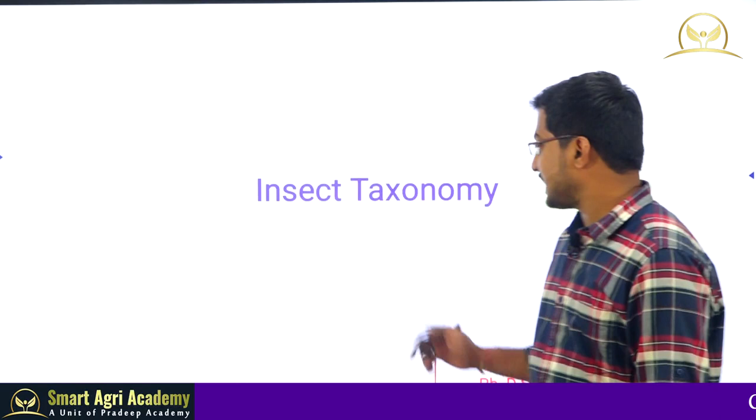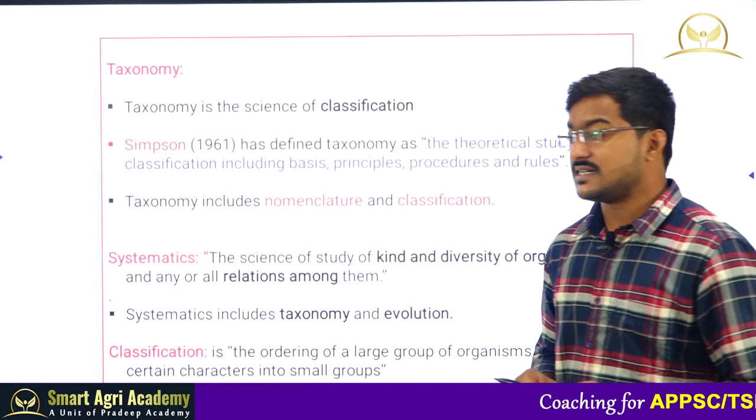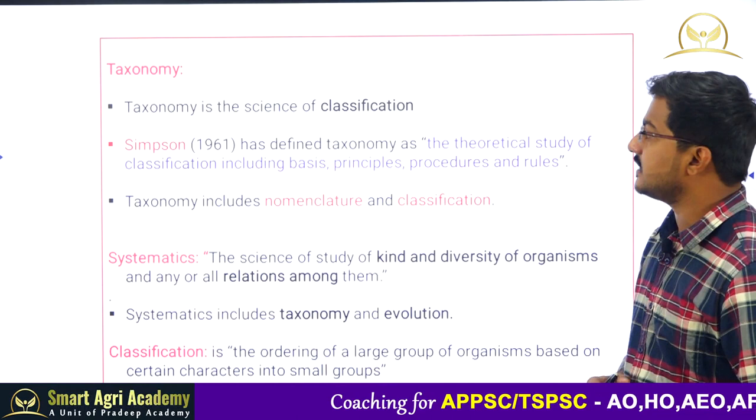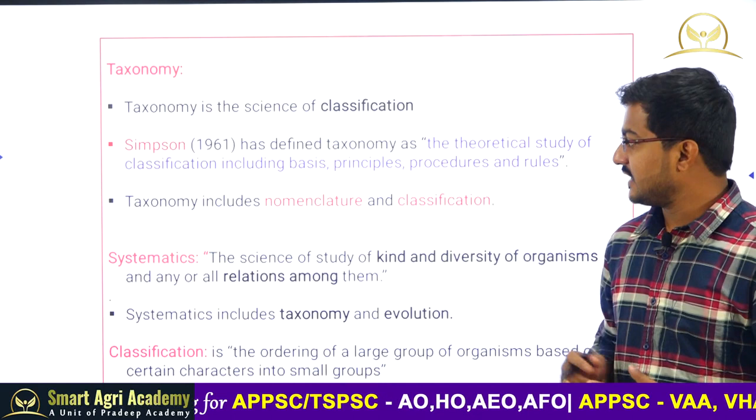Coming to insect taxonomy: taxonomy is a science of classification. The definition given by Simpson in 1961 states that taxonomy is the theoretical study of classification, including the basis, principles, procedures, and rules for classifying insects. Taxonomy includes two terms: nomenclature as well as classification.